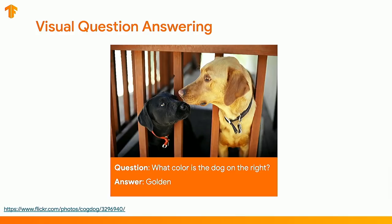In VQA, you're given two inputs: an image — here we have a pair of dogs — and a question in natural language, such as 'What color is the dog on the right?' To answer a question like this, you need a much more sophisticated model than just an image classifier, though you can still phrase this as a classification problem.